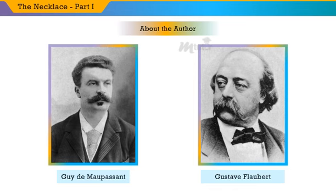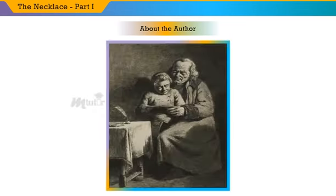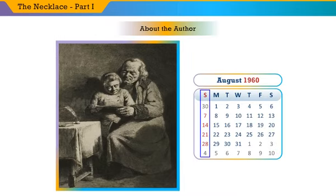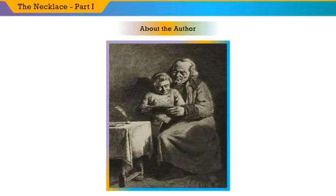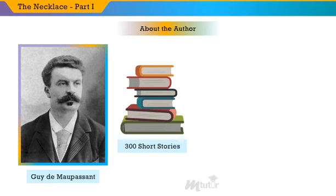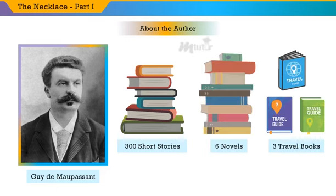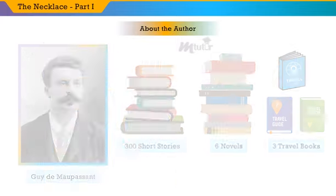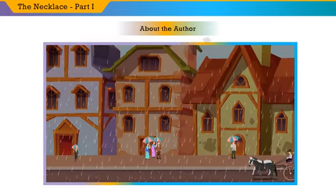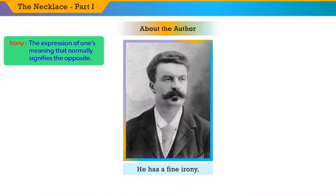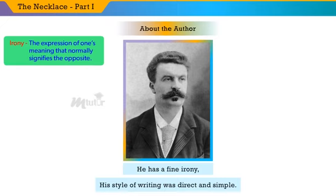Gustave Flaubert, a famous French novelist, was his major inspiration. Guy de Maupassant used to spend most of his Sundays with this great French novelist. This acquaintance made him a renowned writer in the near future. Almost 300 short stories, 6 novels, and 3 travel books have been published by Guy de Maupassant. Most of his stories were about the everyday life of simple and humble people. He has a fine irony, and his style of writing was direct and simple.